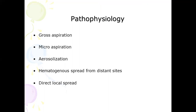Moving on to pathophysiology — how does pneumonia occur? Typically, pneumonia means the proliferation of microbial pathogens at the alveolar level and the host response to those pathogens. Usually when a person sleeps, there is a small volume of microaspiration, and there is gross aspiration in patients who have a decreased level of consciousness.